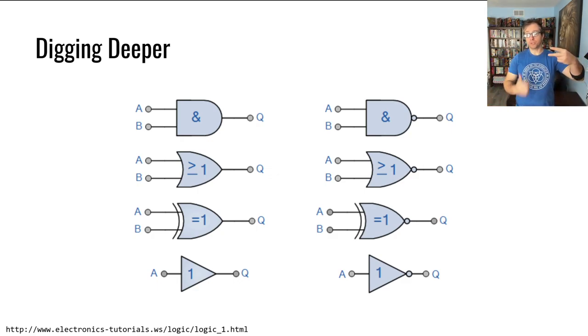You could build these things in video games. People build whole computers in Dwarf Fortress using water as the computing medium, or in Minecraft using redstone. You have OR gates where if either input is true, the output is true. XOR gates where if only one input is true, the output is true. And NOT gates where if the input is true, the output is false.